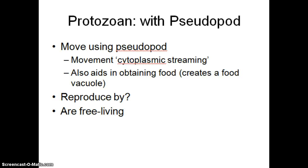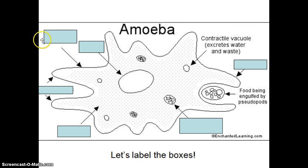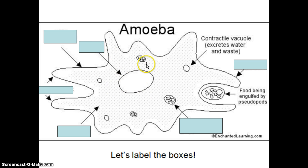Another protist that moves with pseudopod is the amoeba, which we looked at with our microscopes. They reproduce asexually and are usually free-living in ponds and streams. In a diagram of an amoeba, you can label the food vacuole, pseudopod engulfing food, contractile vacuole, nucleus, plasma membrane, and cytoplasm.